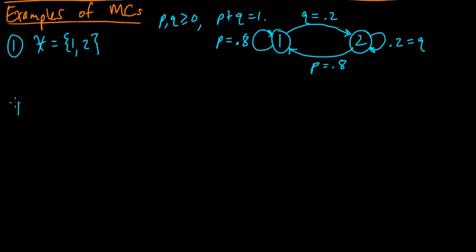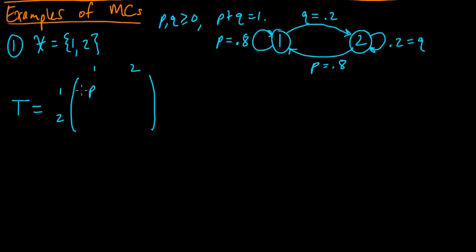Let's write down the transition matrix. I'll annotate the rows and columns so we can keep track of what's going on. The first entry is the probability of going from one to one, which is P. Then the probability of one to two is Q. The probability of going from two to one is P, and two to two is Q. It is a stochastic matrix — non-negative and the rows sum to one.